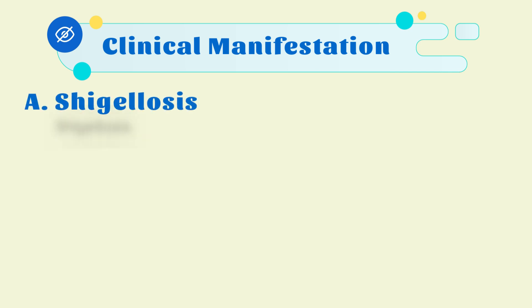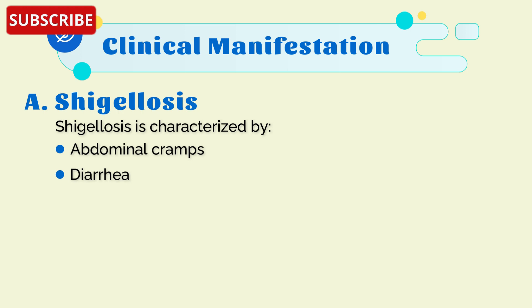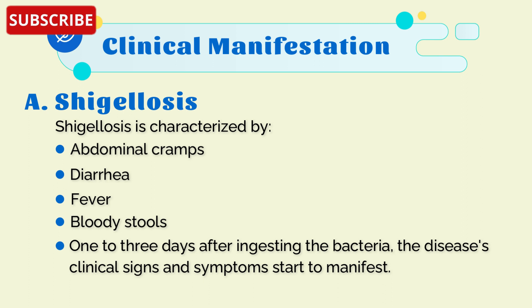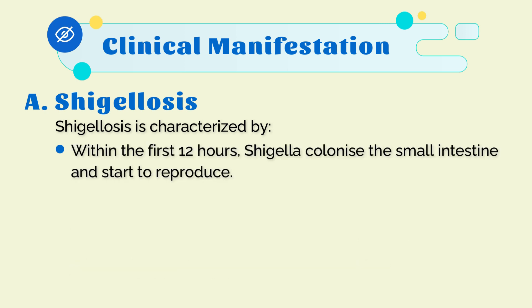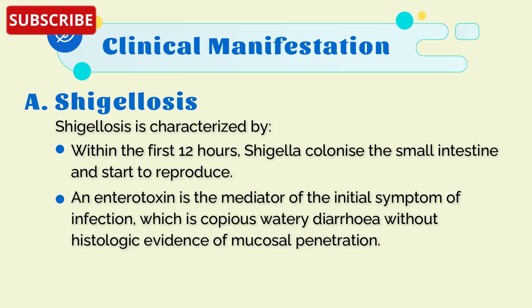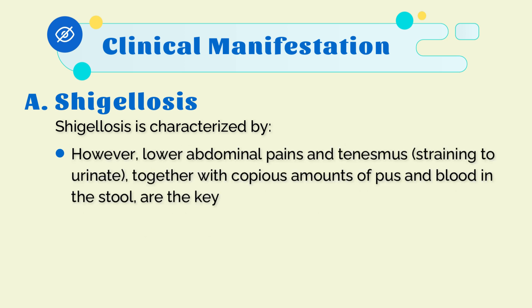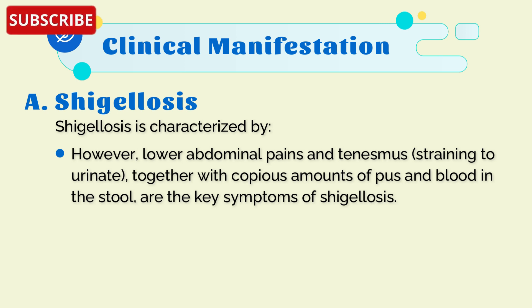Now let's look at the clinical manifestations of Shigella dysenteriae. The first is shigellosis, which is characterized by abdominal cramps, diarrhea, fever, and bloody stool. One to three days after ingesting the bacteria, clinical signs and symptoms start to manifest. Within the first 12 hours, Shigella colonizes the small intestine and starts to reproduce. An enterotoxin mediates the initial symptoms — copious watery diarrhea — without histologic evidence of mucosal penetration.